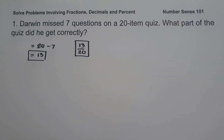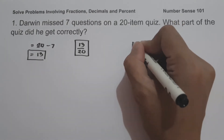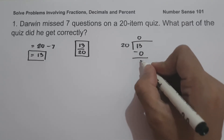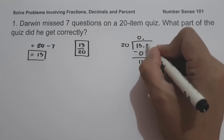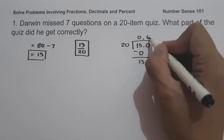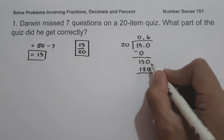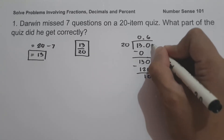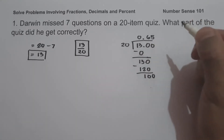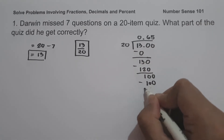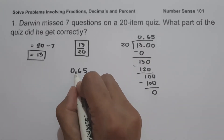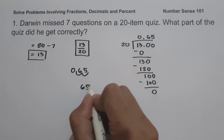And if you want to write your answer in percentage, let us have 13 divided by 20. Adding the decimal point and bringing down zeros: 130 divided by 20 is 6, and 6 times 20 is 120; 130 minus 120 is 10. Bringing down another 0: 100 divided by 20 is 5, and 5 times 20 is 100, remainder 0. Since we have 0.65, let us move two decimal places to the right, and that is 65 percent.